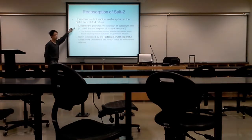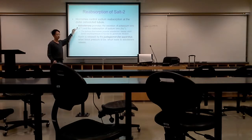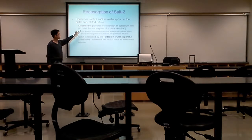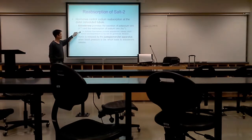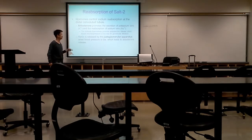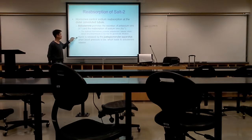Remember aldosterone from the first video. Kidneys secrete renin, and renin induces the secretion of aldosterone. Aldosterone promotes the excretion of potassium ions but promotes reabsorption of sodium ions. When we have low blood volume or low blood pressure, the kidney will trigger the release of aldosterone. Renin is an enzyme — not a hormone — secreted by the kidney.